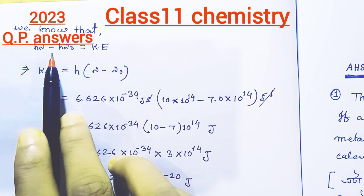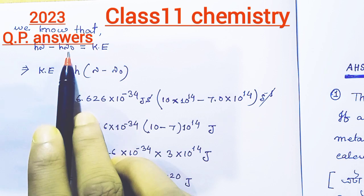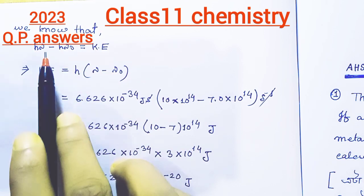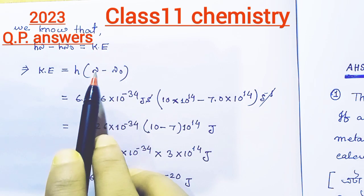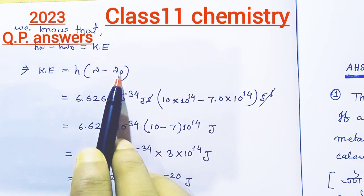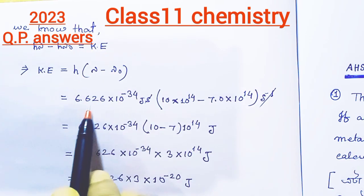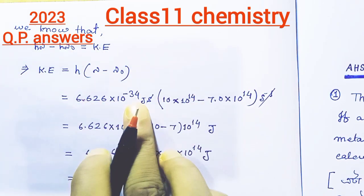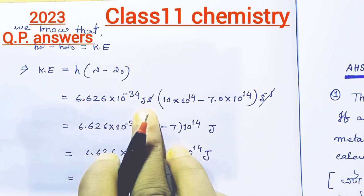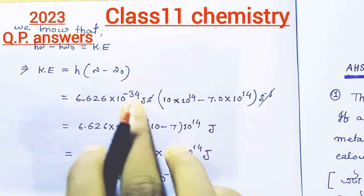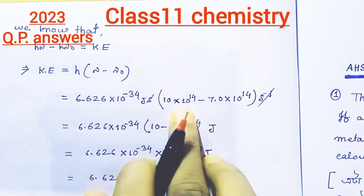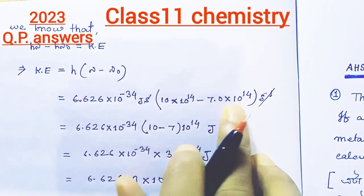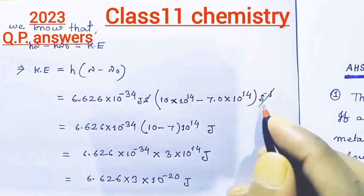If ν_new minus ν_not, the kinetic energy equal to h times ν_new minus ν_not. It's 6.626 into 10 to the minus 34 joules. ν_new and ν_not are frequencies in s⁻¹, so hertz. When s⁻¹ times s⁻¹, s cancels out and we get joules.